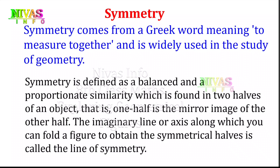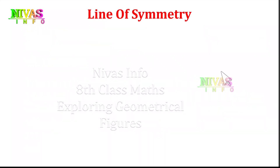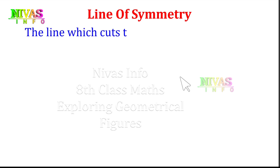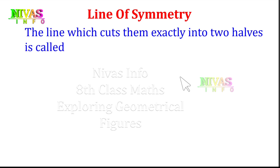When we cut along the imaginary line — the axis — it is a line of symmetry. If we create a line of symmetry in an imaginary image, it is a line of symmetry. The line which cuts a figure exactly into two halves is called the line of symmetry.